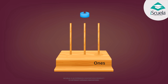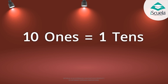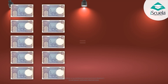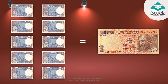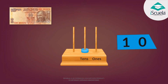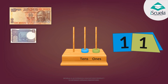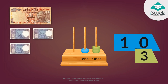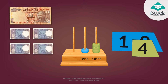We will put one bead in the second stick instead of ten beads in the first stick. The second stick is for the place value of tens — we call it the tens place. Ten ones are equal to one ten. Similarly, we will pick up a single currency note of ten instead of ten one-rupee notes, because ten ones are equal to one ten.